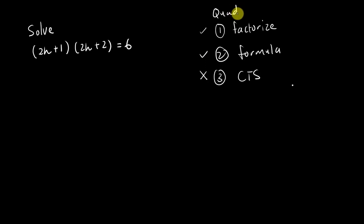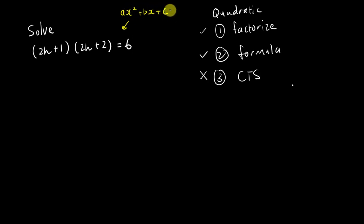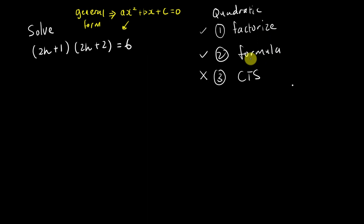Whenever you want to use any of these methods, you always need to change your equation into the general form. The general form of the quadratic equation is ax² + bx + c = 0. You have to make sure your equation fits this general form before you start to factorize, use the formula, or do completing the square. One very important pattern: the whole equation must equal zero, with the x² term first, then the x term, then the constant.